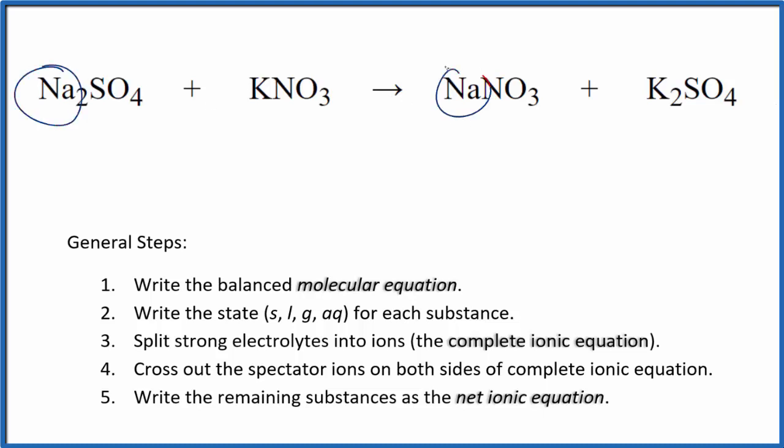Two sodium atoms here and just one here, so if we put a two here, that works out. We have two sodiums, but now we have two nitrates. Let's put a two in front of the potassium nitrate. Two nitrates now, but we have two potassiums. That's fine. We got two potassiums here, and then we have a sulfate. This is the balanced molecular equation.